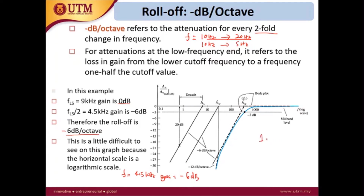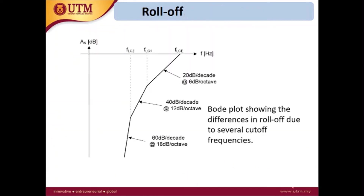For one capacitor, the roll-off is 6 dB per octave. Roughly, 6 dB per octave is equal to 20 dB per decade. You can use either one.